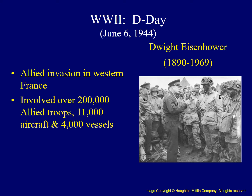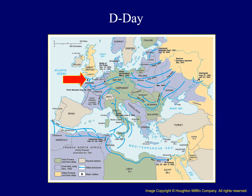The liberation of Europe was one step closer with the largest amphibious invasion in world history in June of 1944 — the Allied invasion in western France. This involved over 200,000 Allied troops from the United States, Great Britain, Canada, and France; 11,000 aircraft and 4,000 vessels had to be coordinated by American General Dwight David Eisenhower. The red arrow on this map identifies the location of the D-Day invasion at Normandy, France. Finally, the second front that Joseph Stalin had been looking for took place.